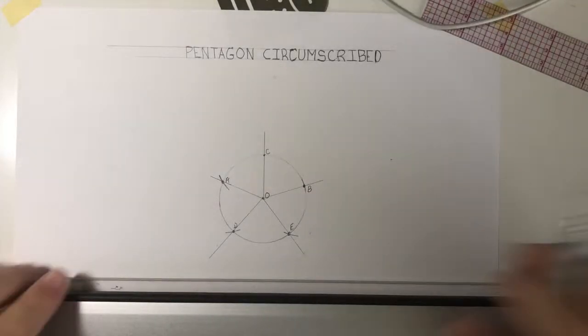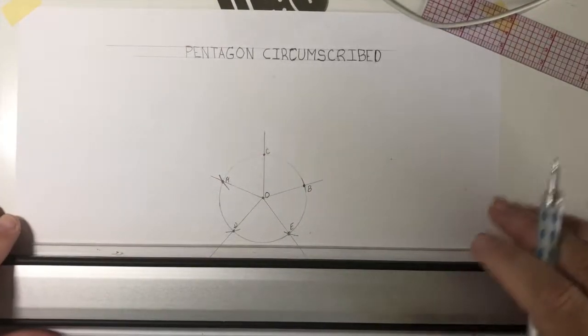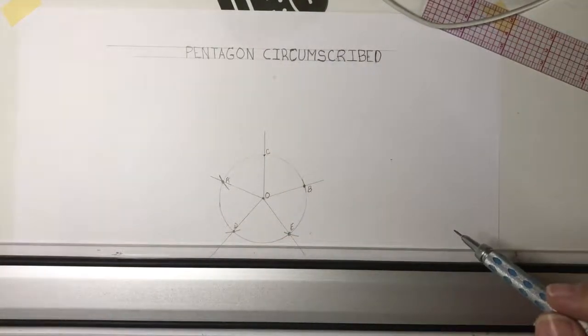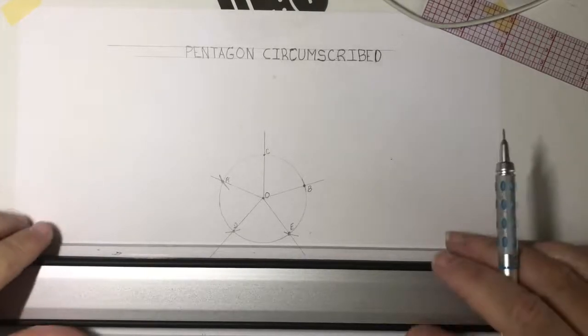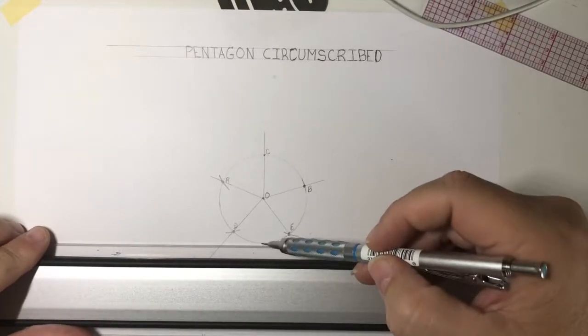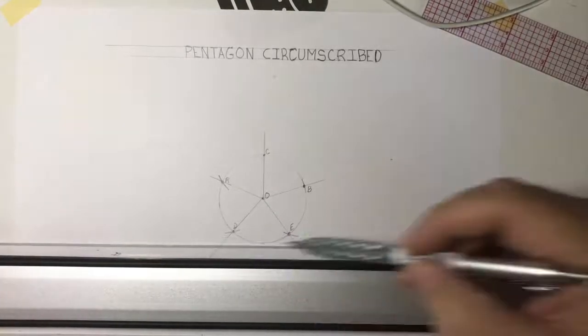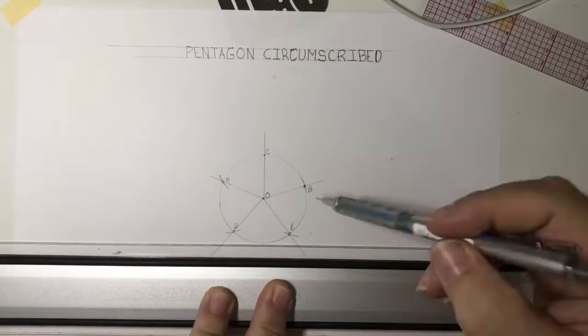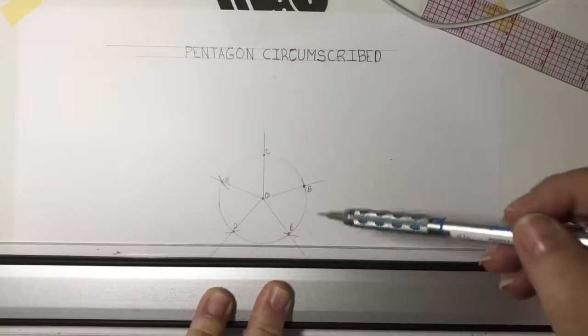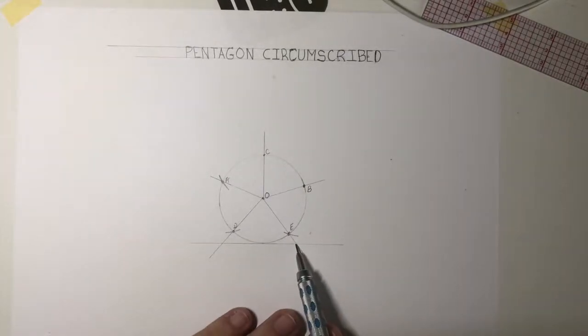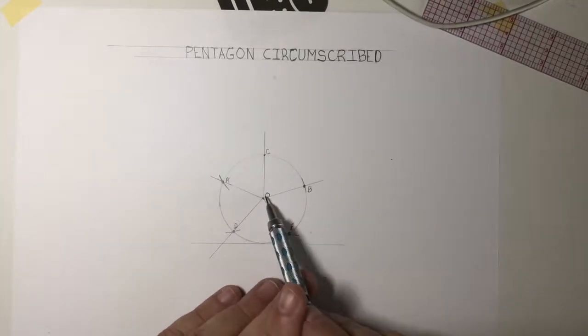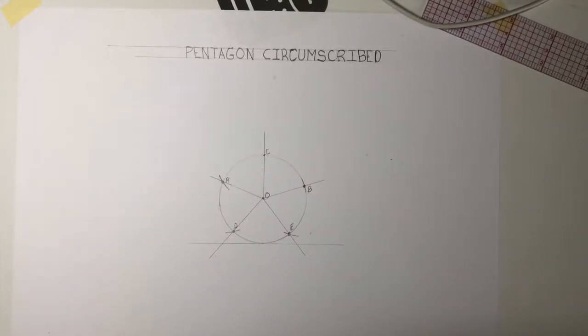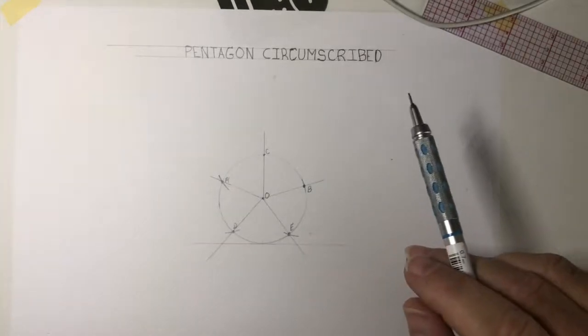Next I use my parallel bar and get a tangent line right across the bottom here. So a tangent line, tangent means that horizontal line is going to meet the circle right at its bottom. And I'm going to draw it till it intersects line OE and line OD. So we got our intersections right there. Now all you have to do, the rest is easy.